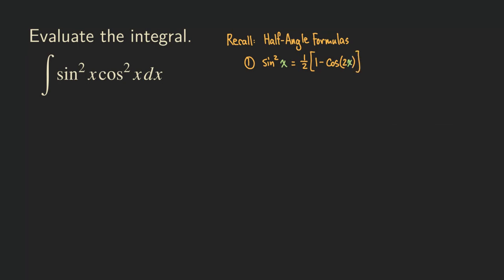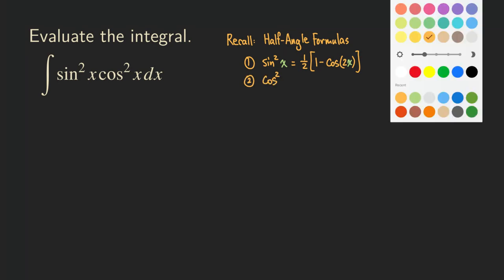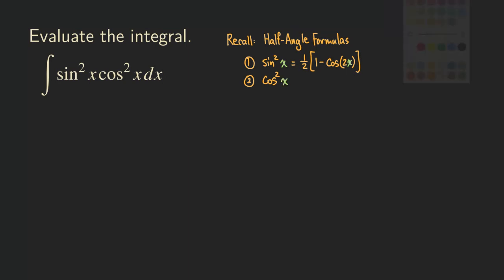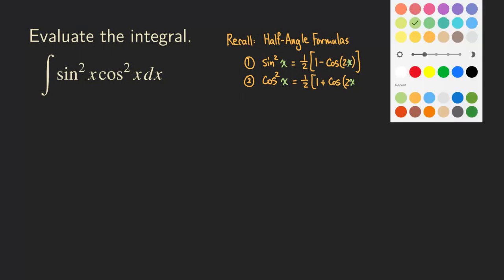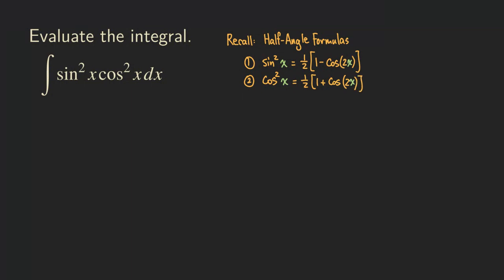The cosine version is almost exactly the same: cosine squared x equals one-half times (1 plus cosine of 2x). Notice how similar the two formulas are — the only difference is the sign in the middle.